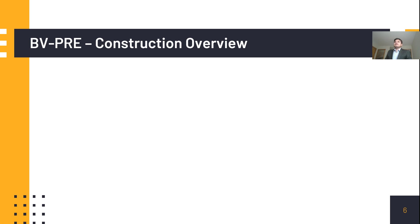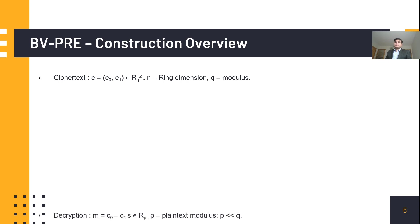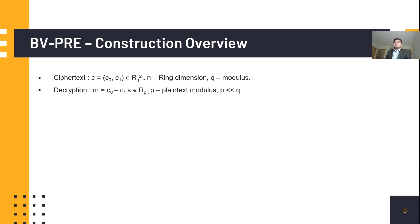Let's briefly go over the construction of the BVPRE scheme, which is built on top of the BVFHE scheme. The ciphertext consists of a pair of ring LWE elements in R_Q, where Q is the ciphertext modulus and N is the ring dimension. Decryption works by computing C0 minus C1·S and reducing it modulo P to get a ring LWE element in R_P as the message, where S is the secret key and P is the plaintext modulus.